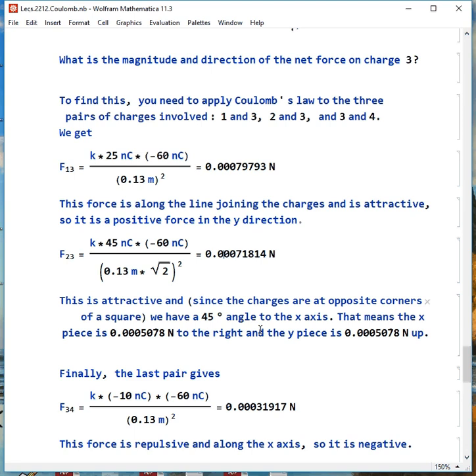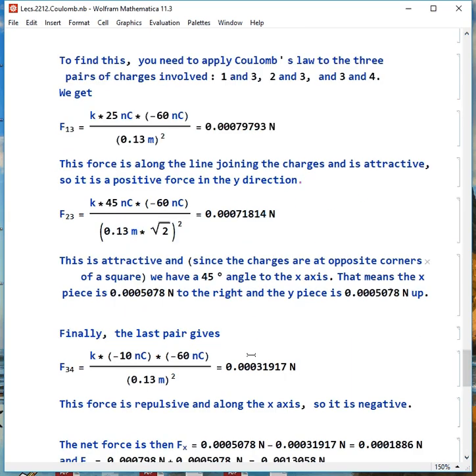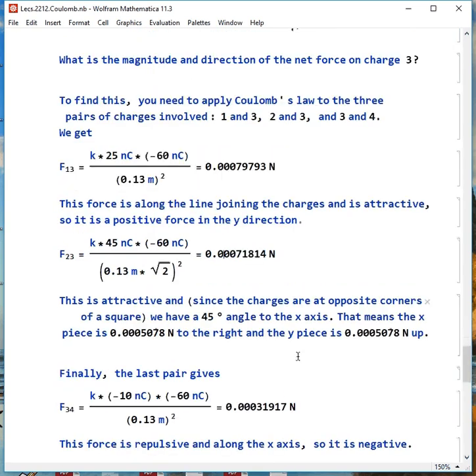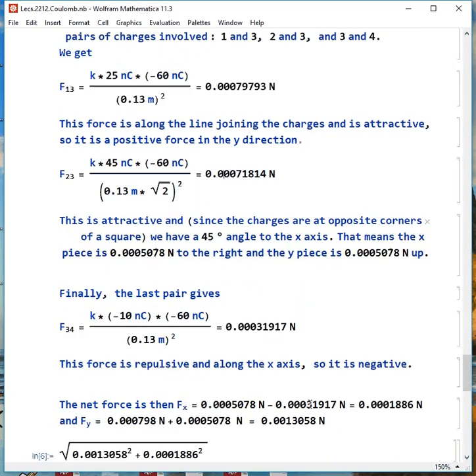The last two charges, 3 and 4 on the bottom, that gives us 0.000319 Newtons. This is repulsive, so this goes in the negative X direction.